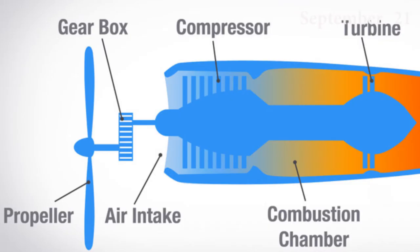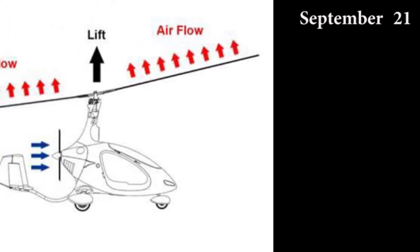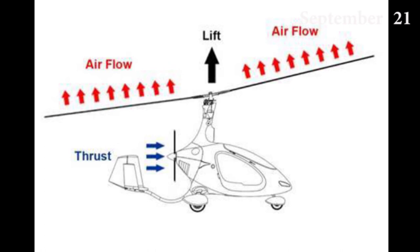These free spinning rotors turn because of the passage of air through the rotor from below. The downward component of the total aerodynamic reaction of the rotor gives lift to the vehicle. Forward thrust is provided by an engine-driven propeller. The autogyro rotor blade generates lift by changing the angle of the air as the air moves upwards and backwards relative to the rotor blade.